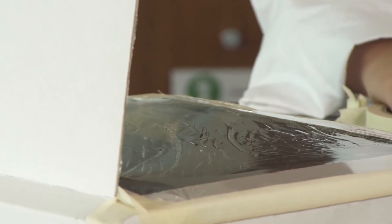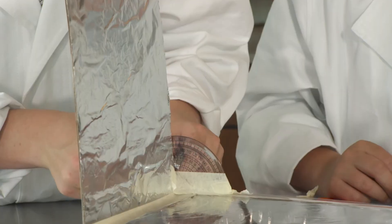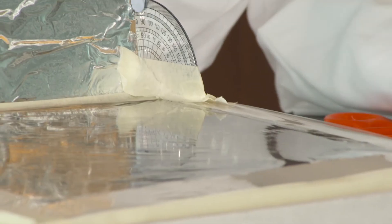To finish the solar oven, tape on the protractor to make an adjustable angle for the mirror. Use a good lump of blue tack to hold the mirror.